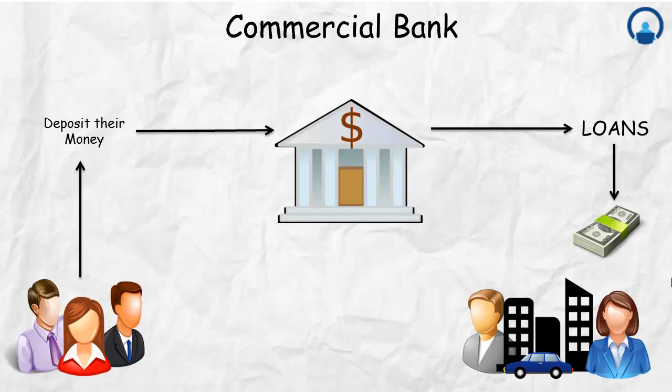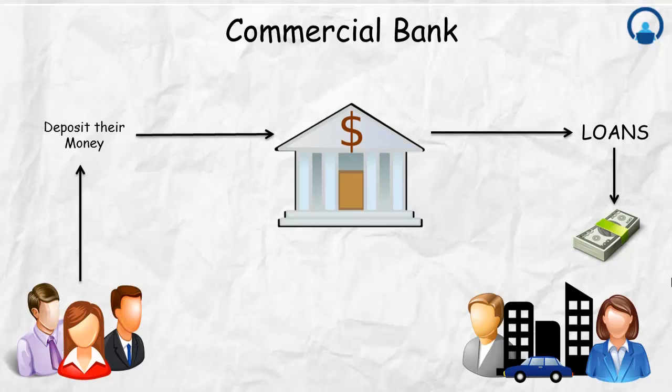How does the bank make money? The bank makes money on the difference in interest rates — the interest spread between what they are lending out and the interest they are paying to depositors. This is how a commercial bank works.